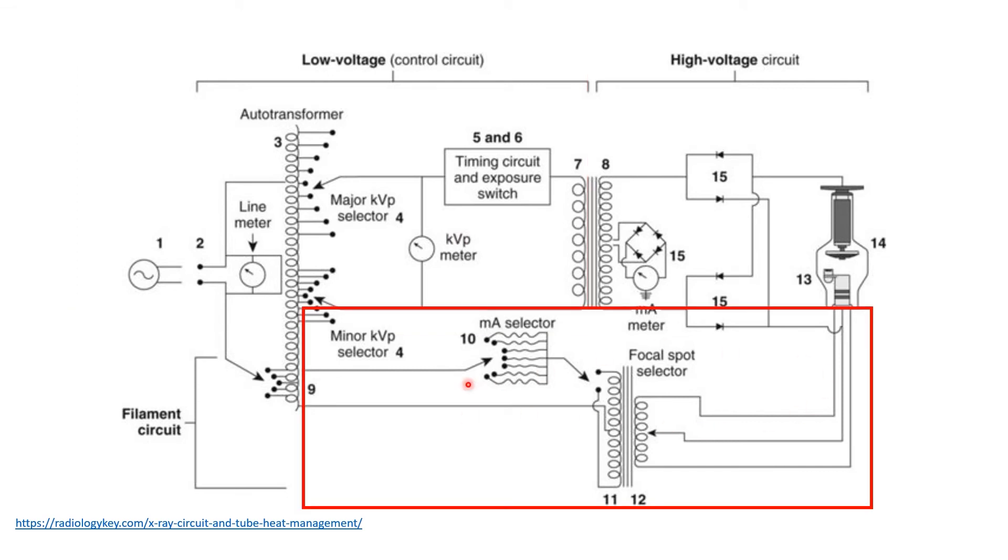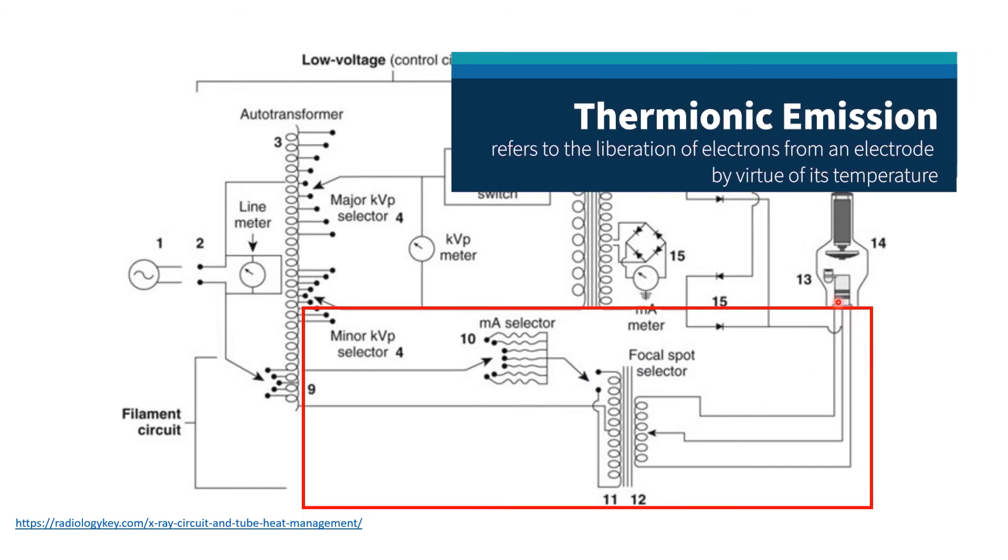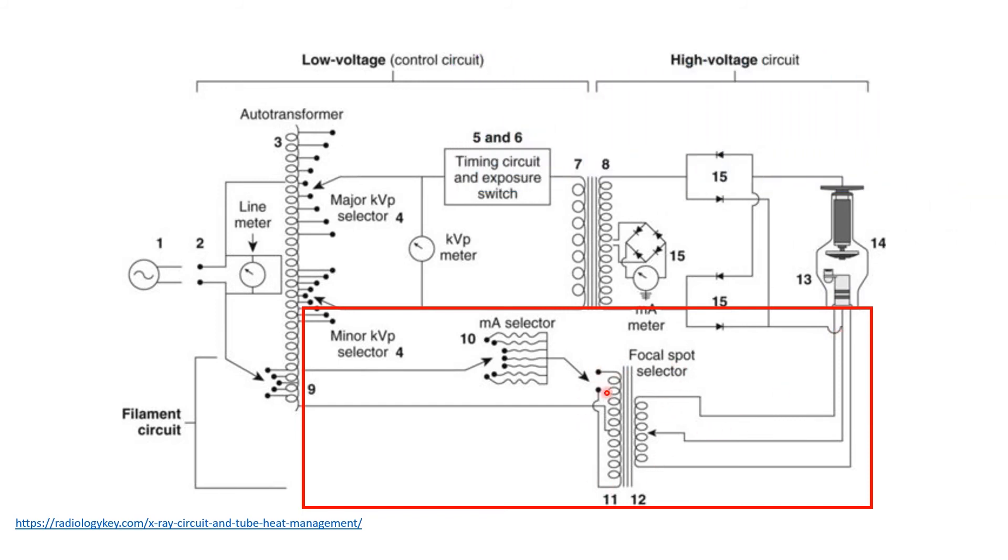Next, we have the filament circuit. This is a sub-circuit that supplies low current to induce thermionic emission of electrons at the filament side of our X-ray tube. We have here a step-down transformer before introducing the current to the filament. This circuit is activated by the operator through the adjustment of the MA.